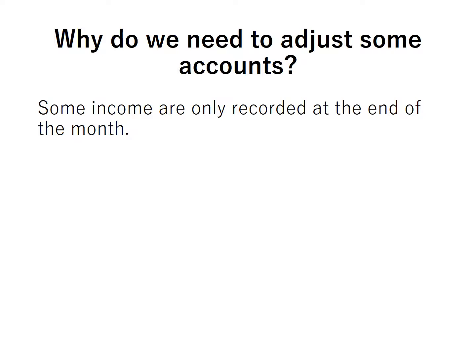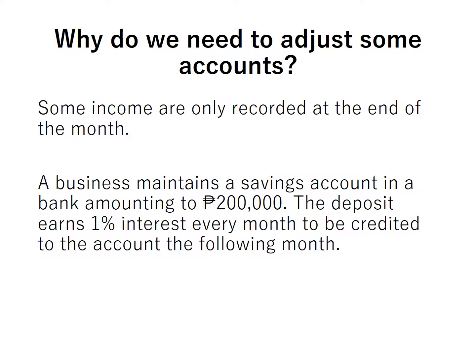Let us discuss the first reason: some income are only recorded at the end of the month. Please take note, the examples we are going to discuss are not related to PAMIN 2.1 consulting services or to any of our previous exercises. We're just going to discuss them so that you can better understand the need to adjust some accounts of the business at the end of the month. So, this is an example: a business maintains a savings account in a bank amounting to P200,000. The deposit earns 1% interest every month, to be credited to the account the following month.